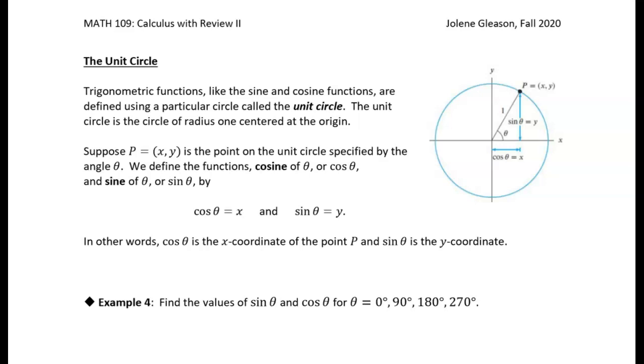All right, so like I said before, we are going to define sine and cosine in terms of the unit circle. So first of all, what is the unit circle? So as you might expect, the unit circle is a circle with a radius of one unit.